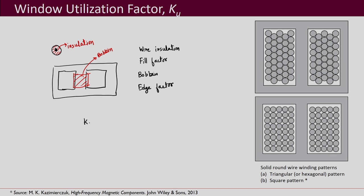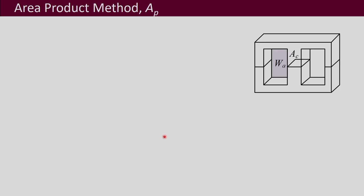The window utilization factor is represented by the symbol Ku, and most of the time its value is taken between 0.4 and 0.5. A value of 0.4 is a very common choice, meaning 40 percent of the available window area is what we can actually use for magnetics design.